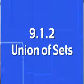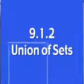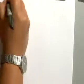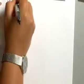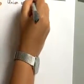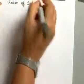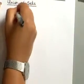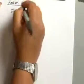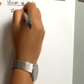Now we want to talk about how to find the union of sets, and we will use this idea of union of sets to help us solve a compound inequality with the word 'or' in it. So let's go ahead and look at our union of sets here.